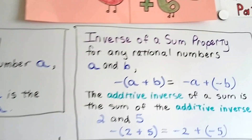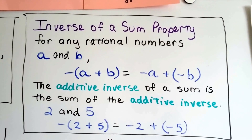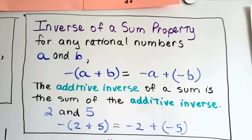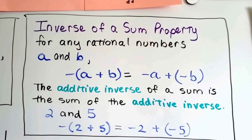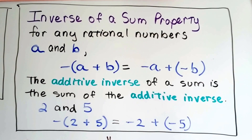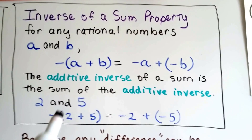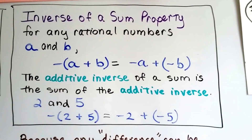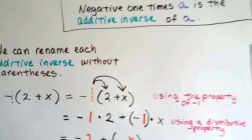The inverse of a sum property says: for any rational numbers a and b, the additive inverse of a sum like a plus b is the sum of the additive inverses — negative a plus negative b. So imagine a and b were 2 and 5. That would mean if we have a negative on the outside of the parentheses and then 2 plus 5, it gets distributed to each one, giving us negative 2 plus negative 5.